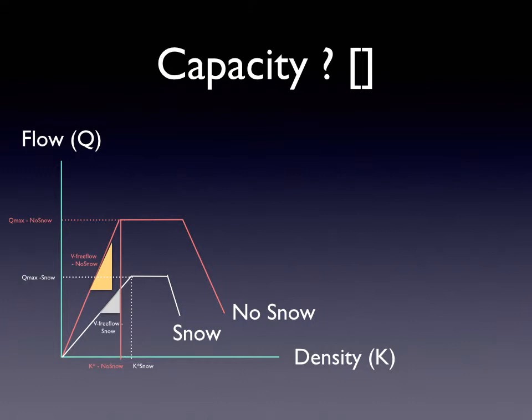So on our QK curve what's happening? We have the initial QK curve when we have no snow and we have some capacity of 1800 here. When there's snow the capacity drops to 1200. We might reduce the speed as well, so the graph will look like this with snow.